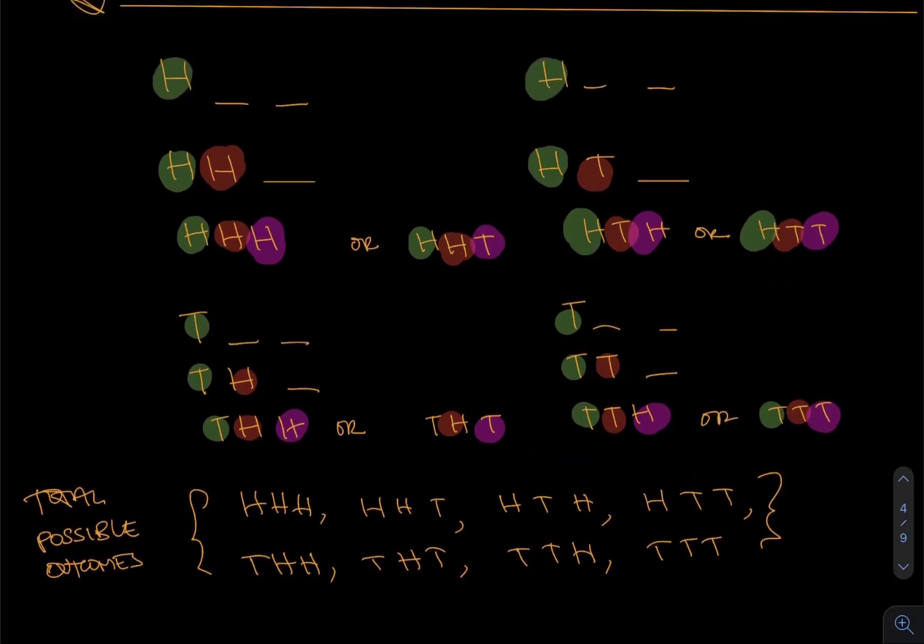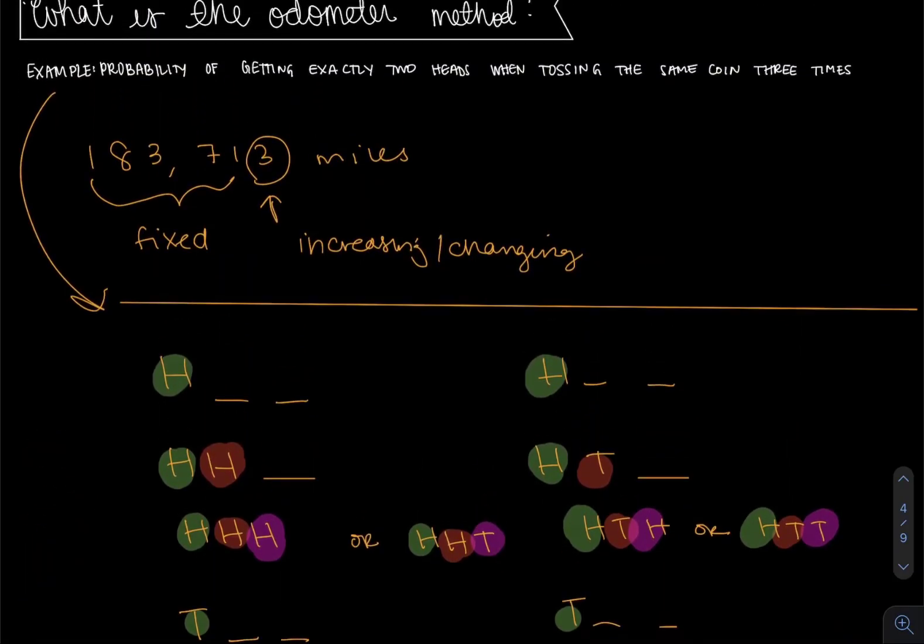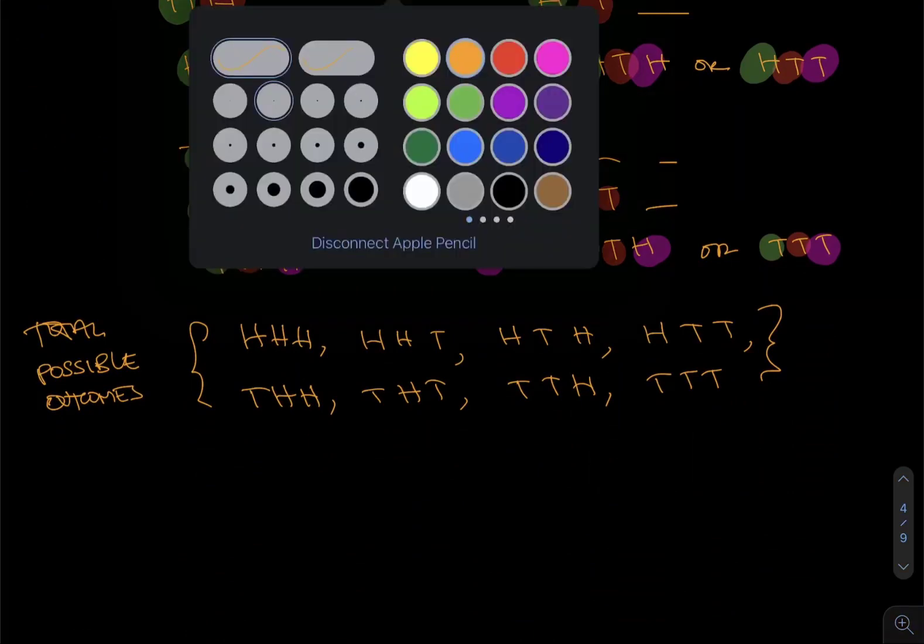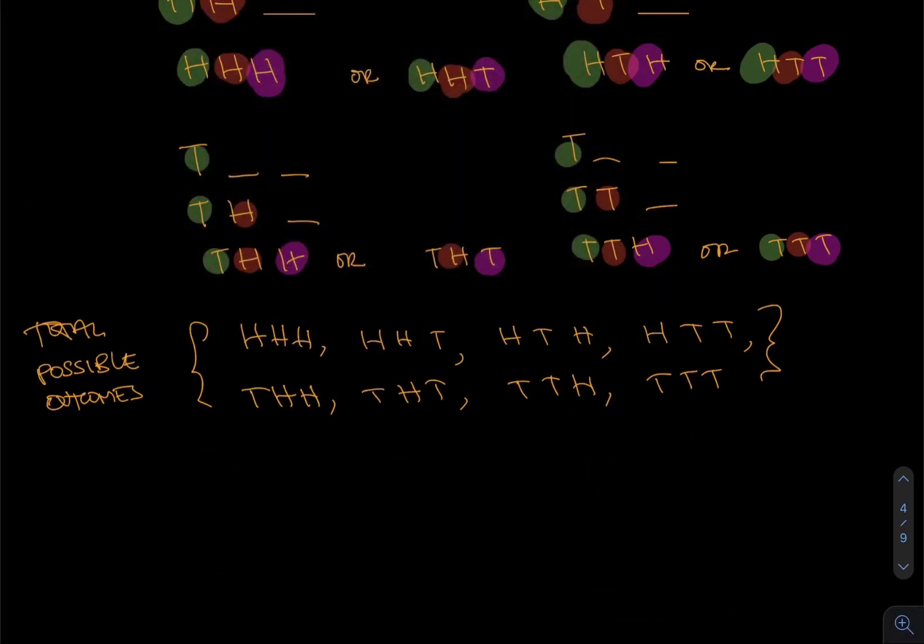If we want to go back and answer that question of getting exactly two heads when you toss the same coin three times, we could just go through and circle the values that give us exactly two heads. So here's one of them: heads heads tails, heads tails heads, tails heads heads. And do you see any more?